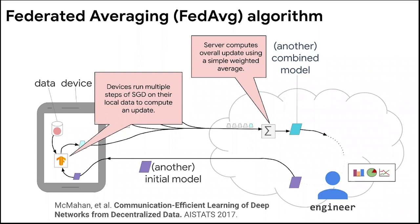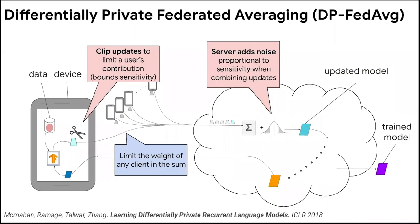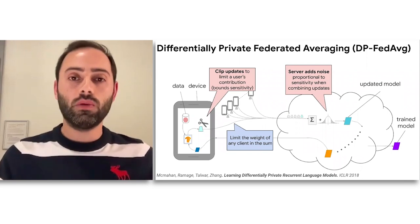You can do thousands of rounds during the course of training. If you want to add DP into the picture, after you're done training locally on the device, you take the updated model and clip it in the L2 sense — you clip the L2 norm of the updated model. This ensures we're limiting the user's contribution and bounds the sensitivity of the model to any individual user. Then once we've aggregated the updates across clients, we add noise to make sure the model on the server does not overfit to any user's update. Usually we use Gaussian noise in this process.